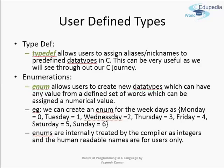Now we come to user-defined data types. Typedef allows you to assign any alias or nickname to any data type in C. This is useful for making your program compiler-independent. For example, since int was 2 bytes on traditional Windows compilers but 4 bytes on Linux, you can define int32 as an alias in a header file using typedef int int32. When porting code from Windows to Linux, you only need to change that one definition — for example, making int32 mean long instead of int.